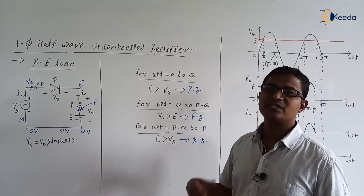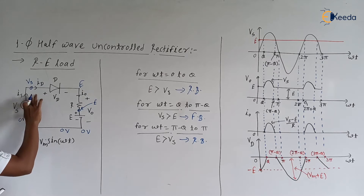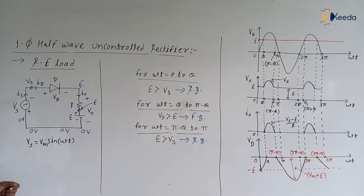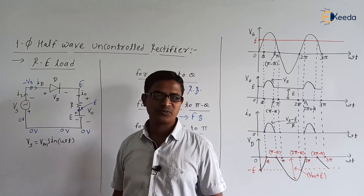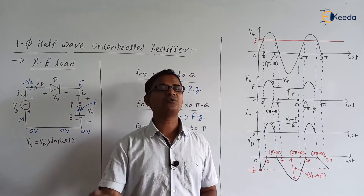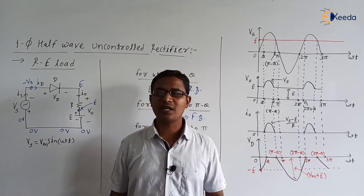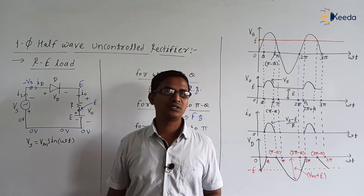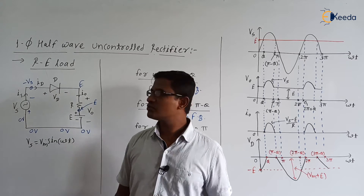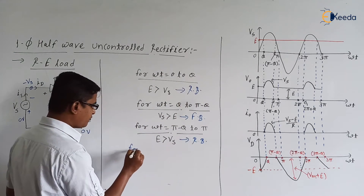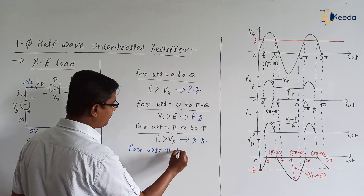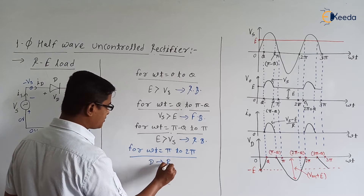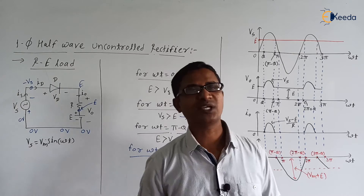When Vs is negative, the polarity is reversed — minus at the top and plus at the bottom. If the bottom node is 0 volt, then the anode potential is minus Vs, which is negative, while the cathode potential is positive E volts. So cathode potential is always greater than anode potential. Therefore, from omega t equal to pi to 2 pi, our diode will be in the reverse bias mode for all time.